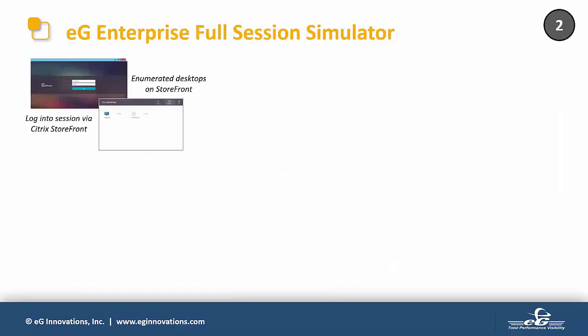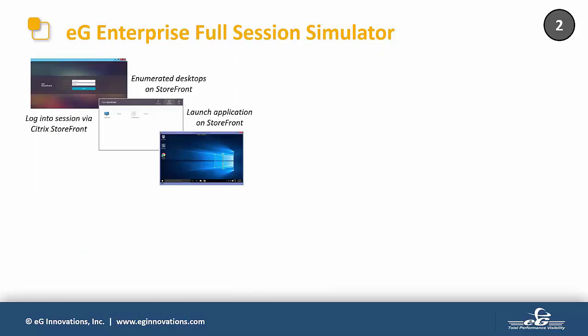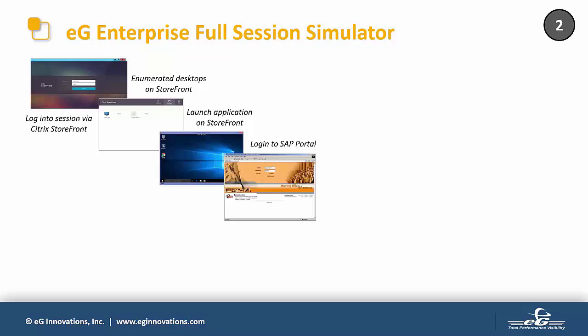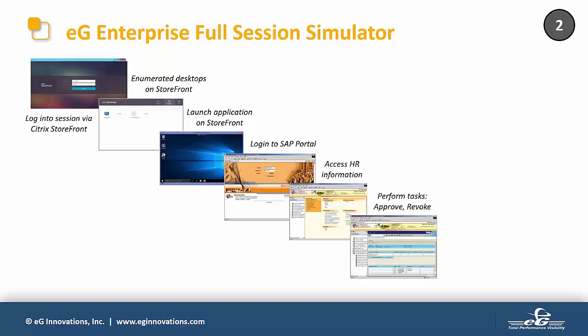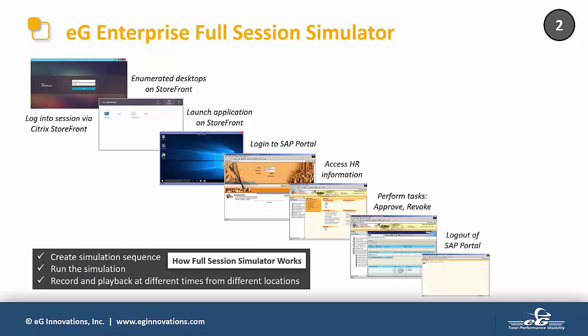Logon simulation simulates three main steps, and once you launch your application or desktop, the logon simulation ends. But what if you want to go beyond application or desktop launch? For instance, after a user logs into their desktop, you may want to simulate launching a browser, connecting to a web portal, logging into the portal, performing some tasks, then logging out of the portal, and finally logging out from the desktop. The logon simulator won't handle this — this is where you need what we call full session simulation.